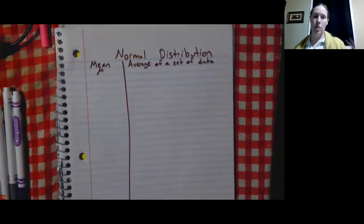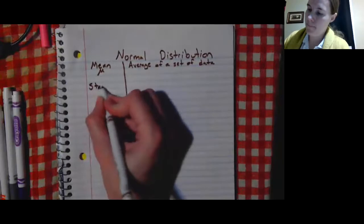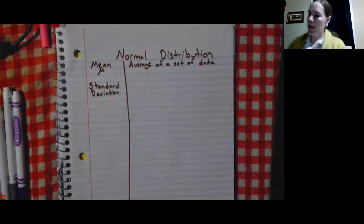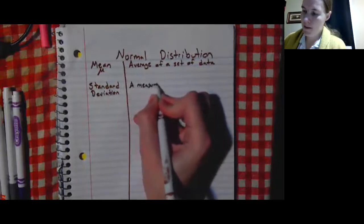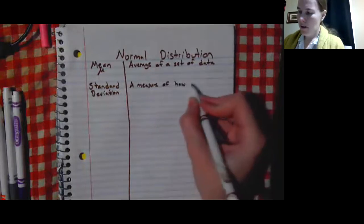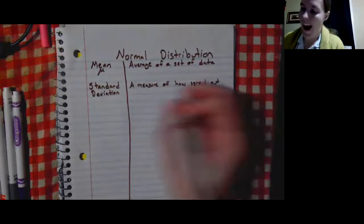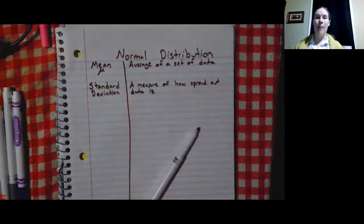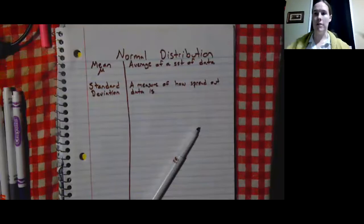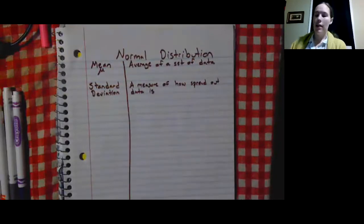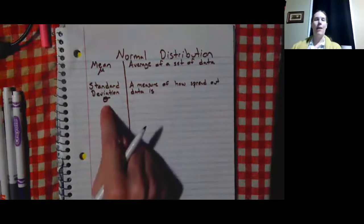The next thing might be a little bit new to you, and it's called the standard deviation. The standard deviation is a measure of how spread out data is. For example, if the lowest test score was zero and the highest was 100, that's a big standard deviation. If the lowest was 50 and the highest was 70, that's a small standard deviation. This is shown by this little symbol here.